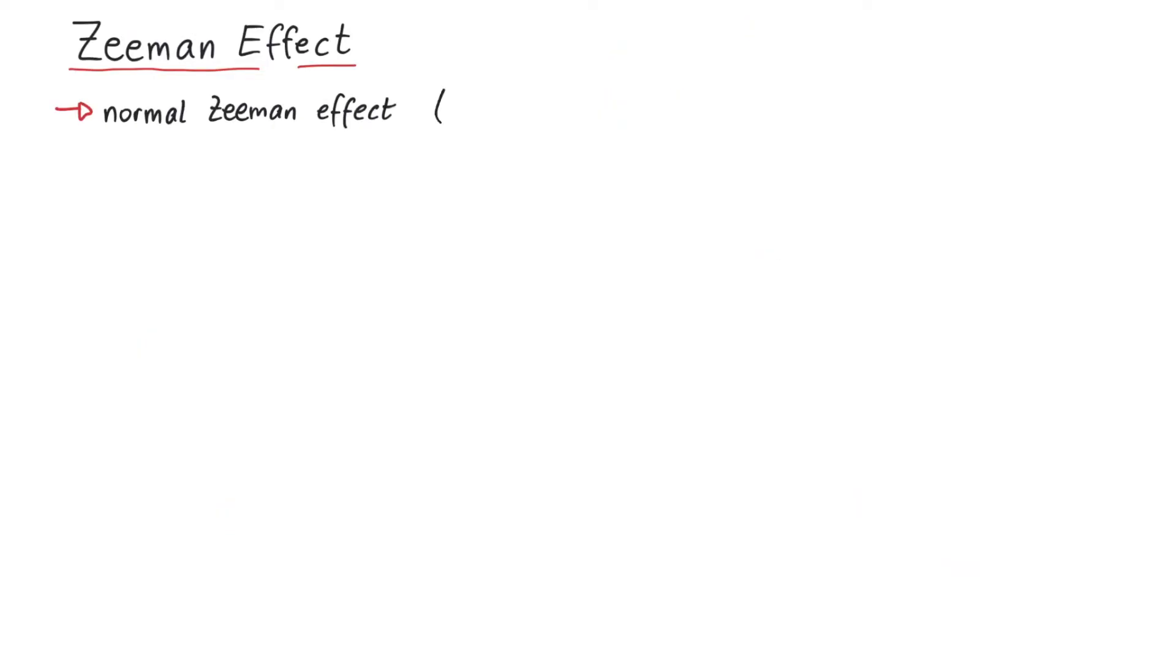Here, we only consider orbital angular momentum. An example could be an electron in a spin-singlet state, such that its spin quantum number is zero.